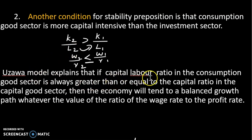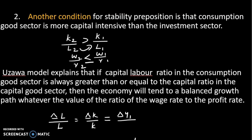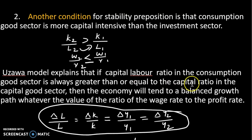The Uzawa model explains that if the capital-labor ratio in the consumption goods sector is always greater than or equal to the capital-labor ratio in the capital goods sector, then the economy will tend to a balanced growth path, whatever the value of the wage rate to profit rate ratio. In steady state: delta Y1 divided by Y1 equals delta Y2 divided by Y2.